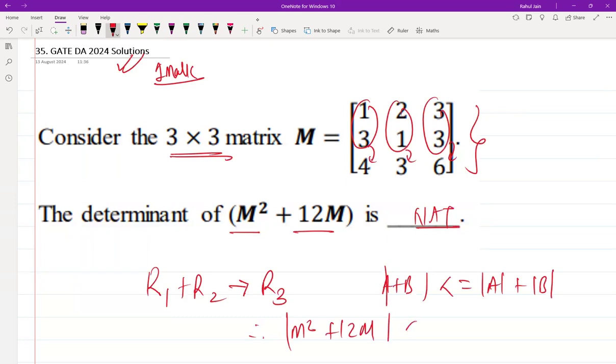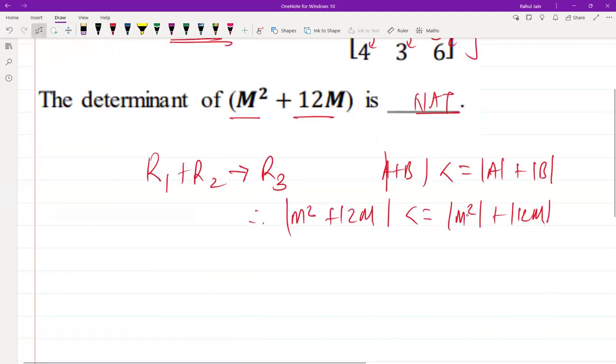Just by the rule, I can say that this will be the condition, so the RHS is |M²| + 12|M| by property of determinant.